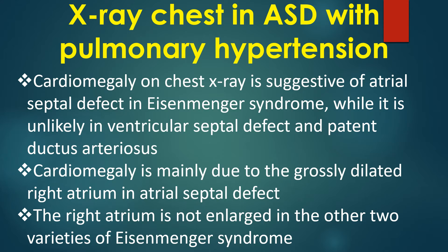Cardiomegaly on chest X-ray is suggestive of atrial septal defect in Eisenmenger syndrome, while it is unlikely in ventricular septal defect and patent ductus arteriosus. Cardiomegaly is mainly due to the grossly dilated right atrium in atrial septal defect. The right atrium is not so enlarged in the other two varieties of Eisenmenger syndrome.